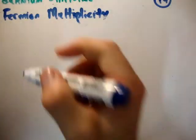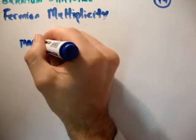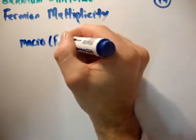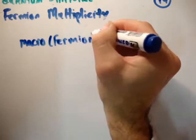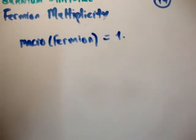Okay? So we said that there is, for fermions, the macroscopic for fermions is one also, because they're also identical particles. So for the same reasoning, it is one.